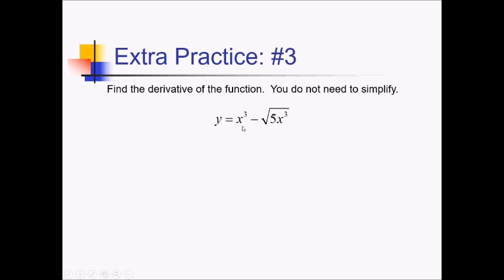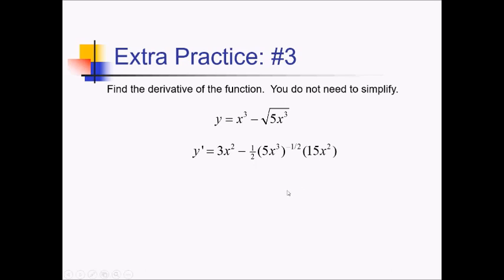For this problem, we want the derivative of this expression. Going from left to right, the derivative of x cubed is 3x squared. For the next term, you could split this up into radical 5 times radical x cubed and make that x to the 3/2, but it's just as fast to use the chain rule. The square root is really a 1/2 power, so using the power rule, we have minus 1/2 times all this to the negative 1/2, times the derivative of 5x cubed — that's a 15x squared out there as well.